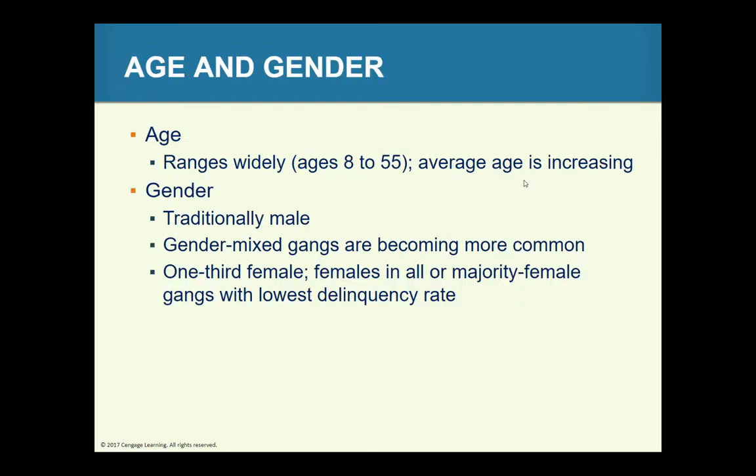The age of gang members ranges from 8 to 55 years old. Gender is traditionally male-dominated, although mixed gangs are becoming more common. Females are often involved in one of three ways: as auxiliaries or branches of male gangs, as part of sexually mixed gangs, or as autonomous groups of female gang members.